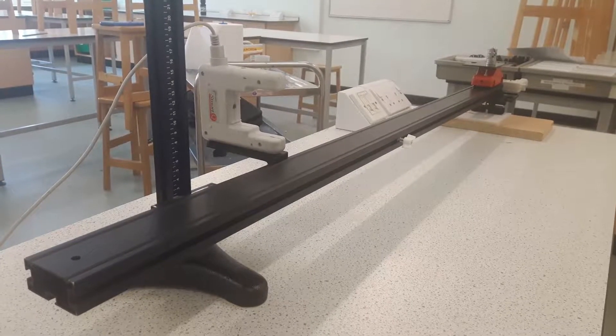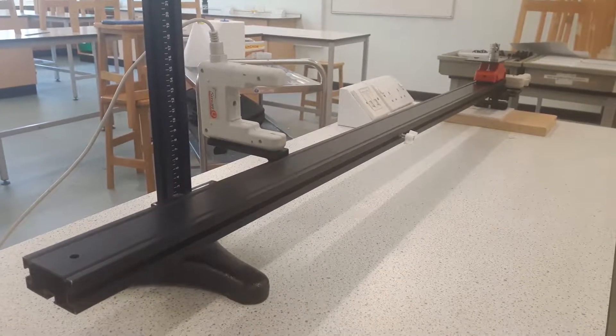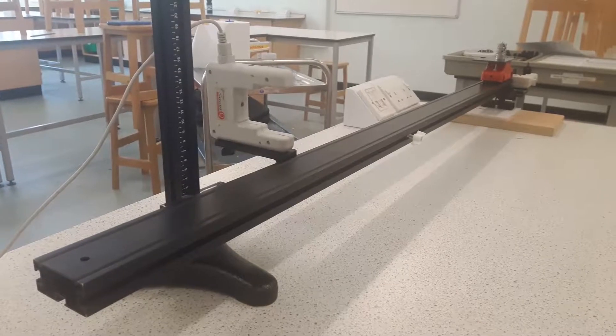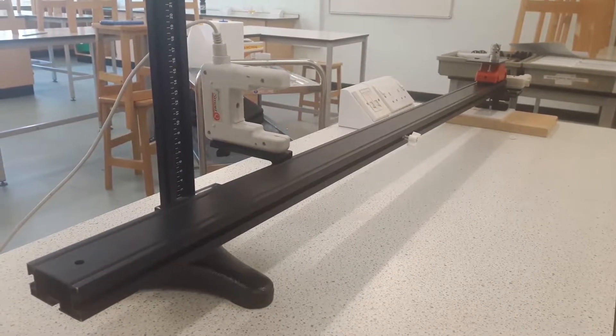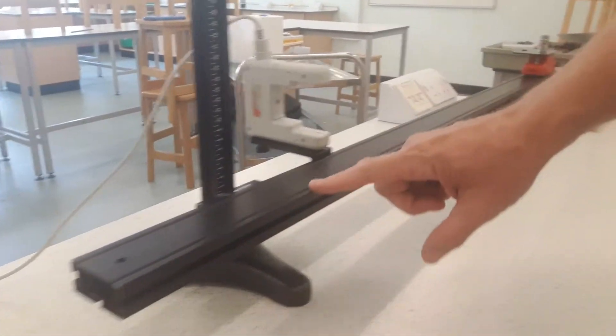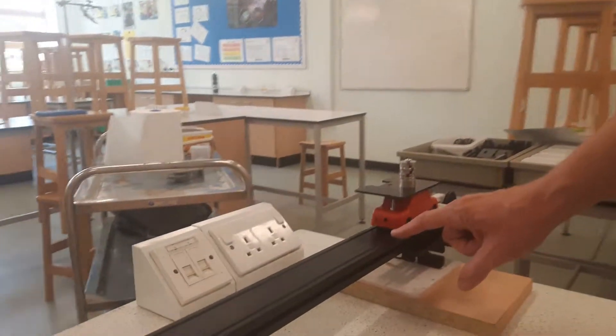So this is the second part of the Newton's second law required practical for AQA GCSE. One thing I didn't mention in the first video is that the setup of the track, although it looks horizontal, is actually on a slight downward slope.